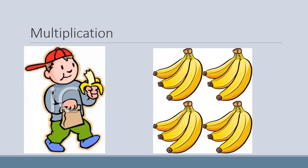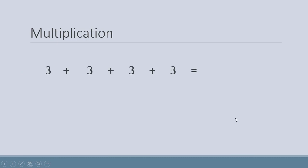Usman ko banana khaana bahut pasand hai aur us ke paas four bunch of bananas hain — chaar bunch bananas hain. Aur ek bunch mein hamare paas three bananas hain. Toh Usman ke paas total kitne bananas hain? We will find it.